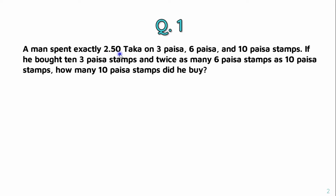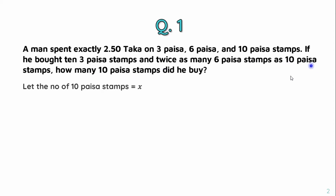So he bought exactly these stamps: 3-pausa stamps, 6-pausa stamps, and 10-pausa stamps. The 3-pausa stamps are exactly 10. And twice as many 6-pausa stamps as 10-pausa stamps. So if he bought x ten-pausa stamps, then 6-pausa stamps are 2x, and twice as many as 10-pausa stamps.